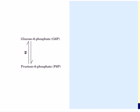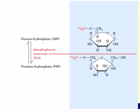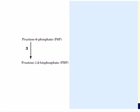The second reaction is the conversion of glucose 6-phosphate to fructose 6-phosphate. This reaction is catalyzed by phosphoglucoisomerase. The glucose of glucose 6-phosphate is converted to fructose by a mechanism in which the ring is opened and reformed to make fructose 6-phosphate.